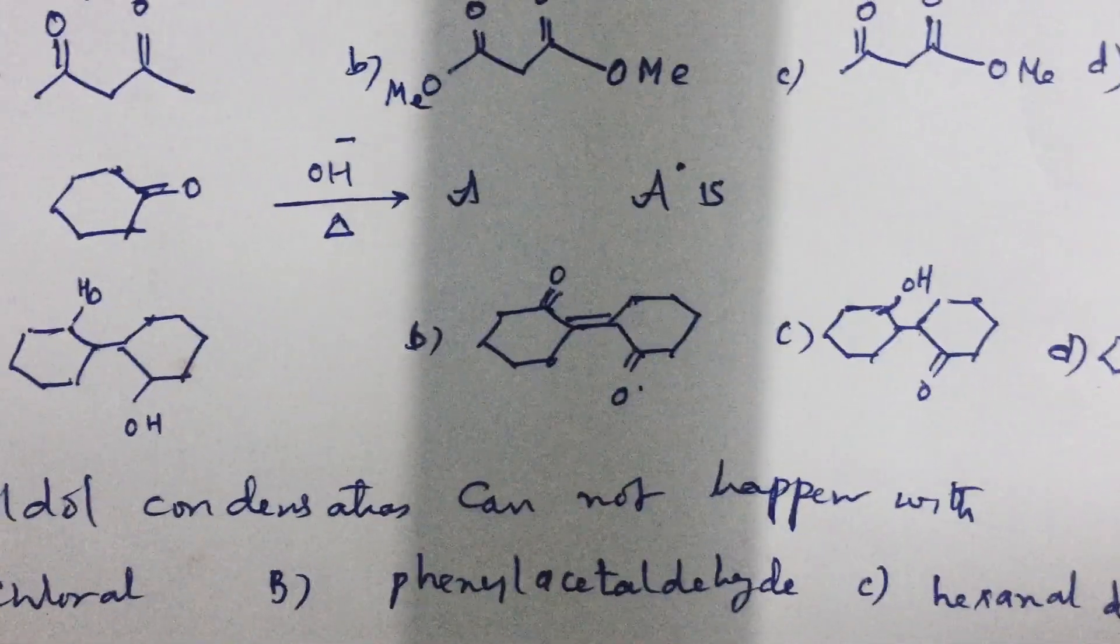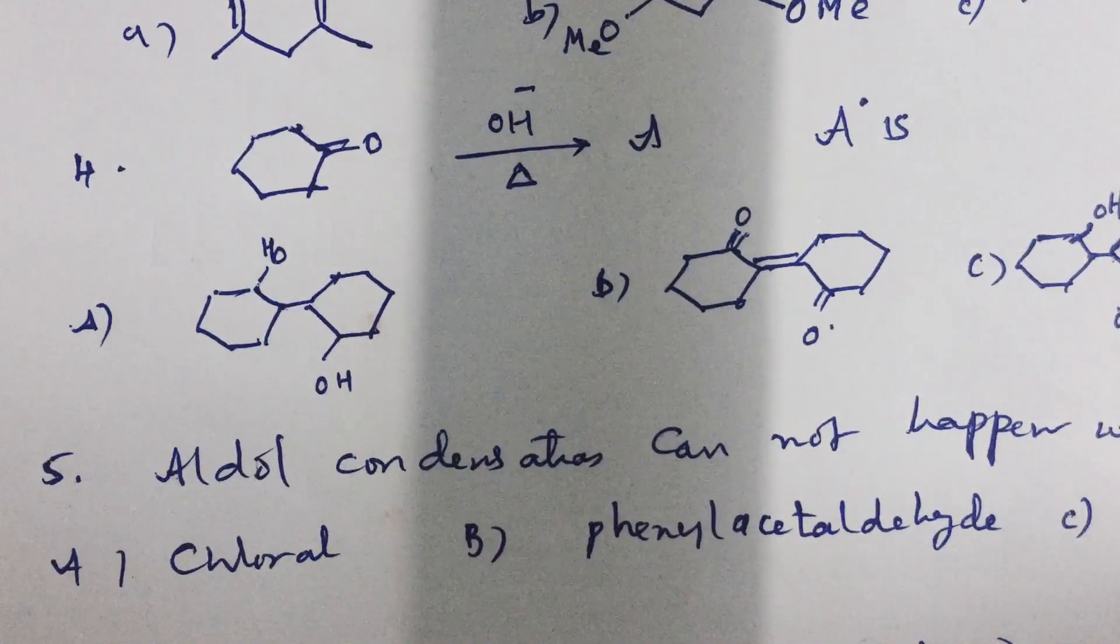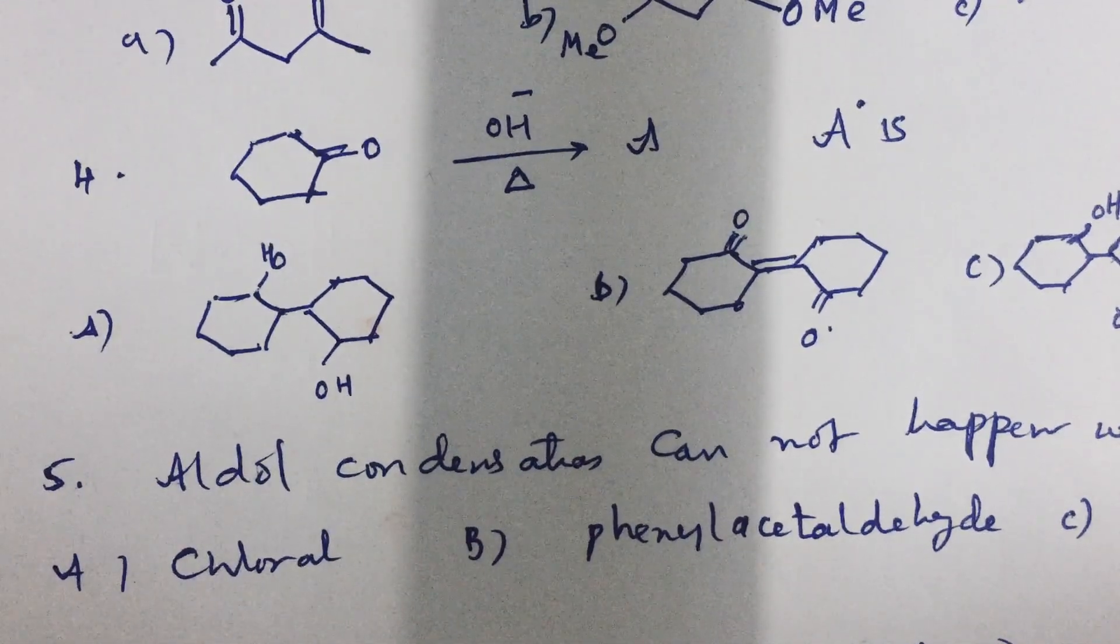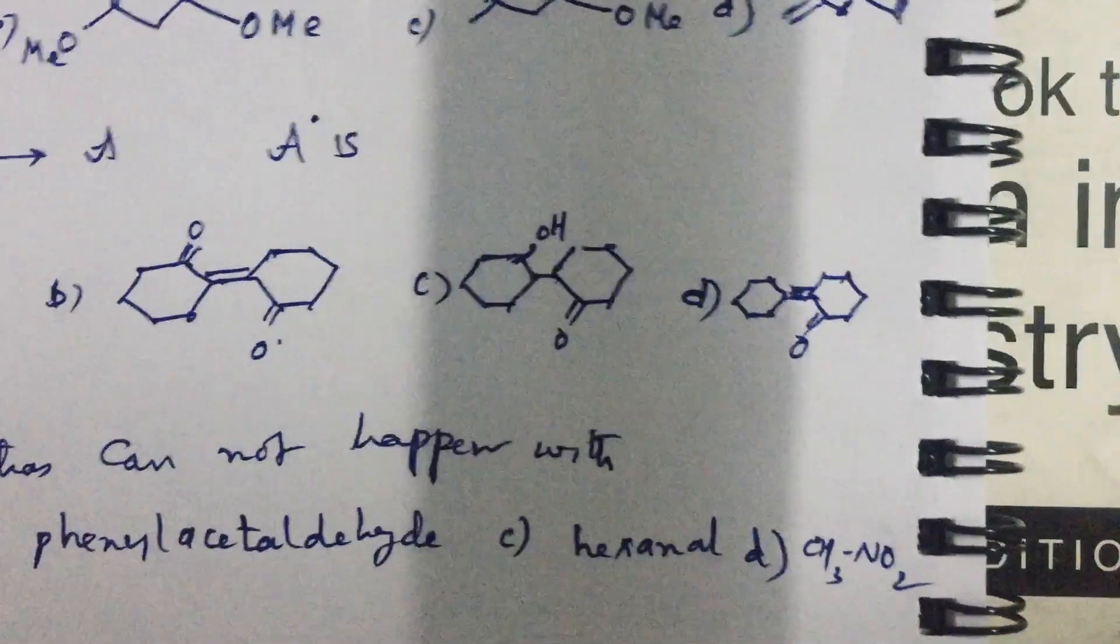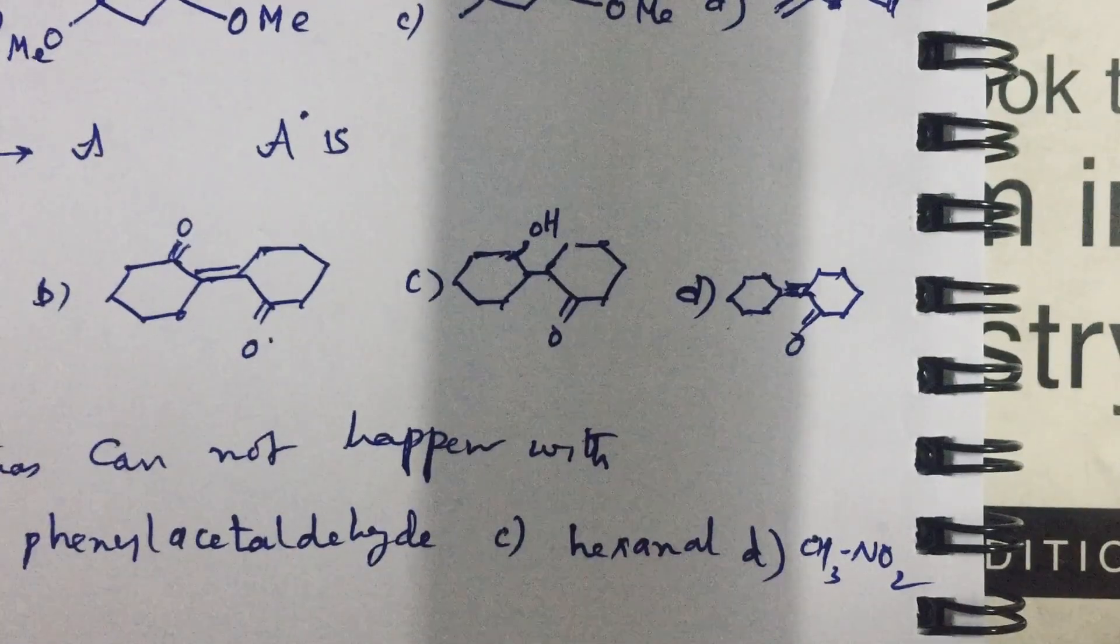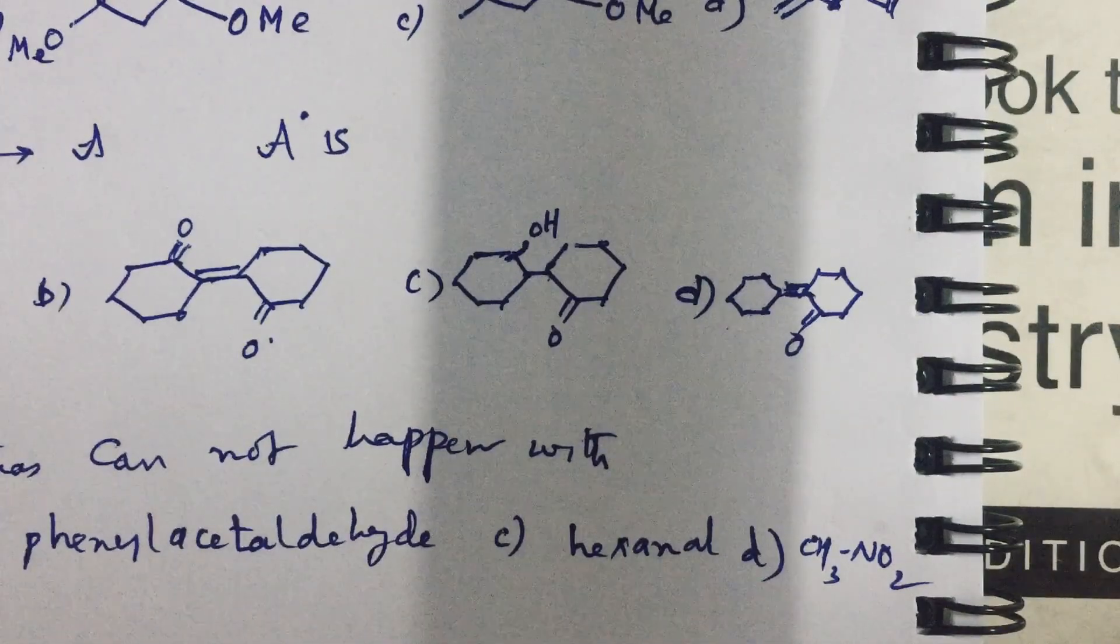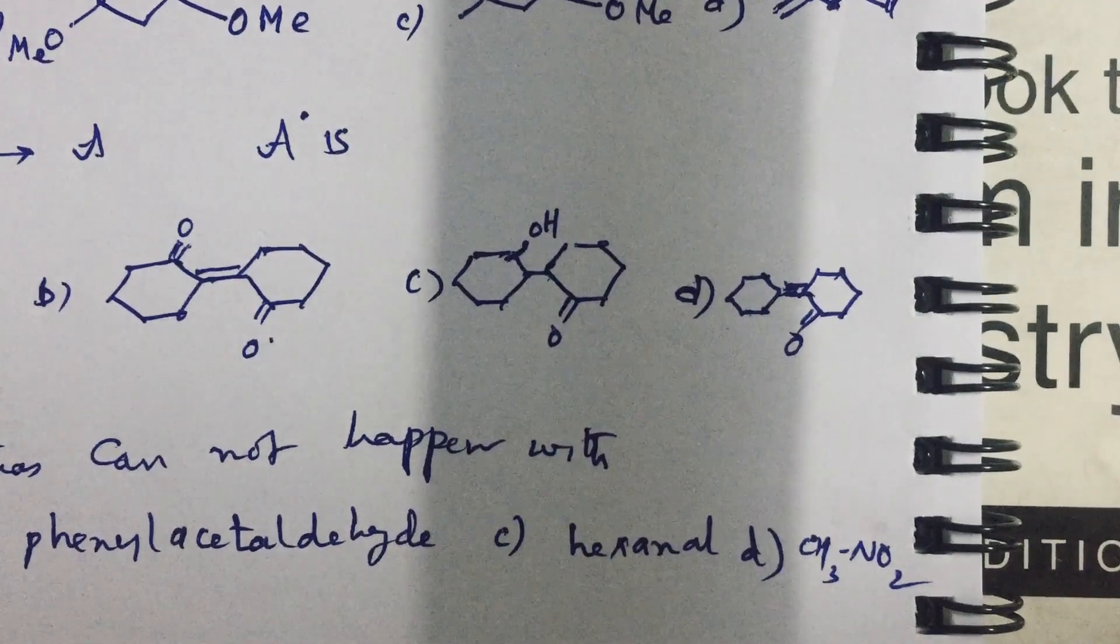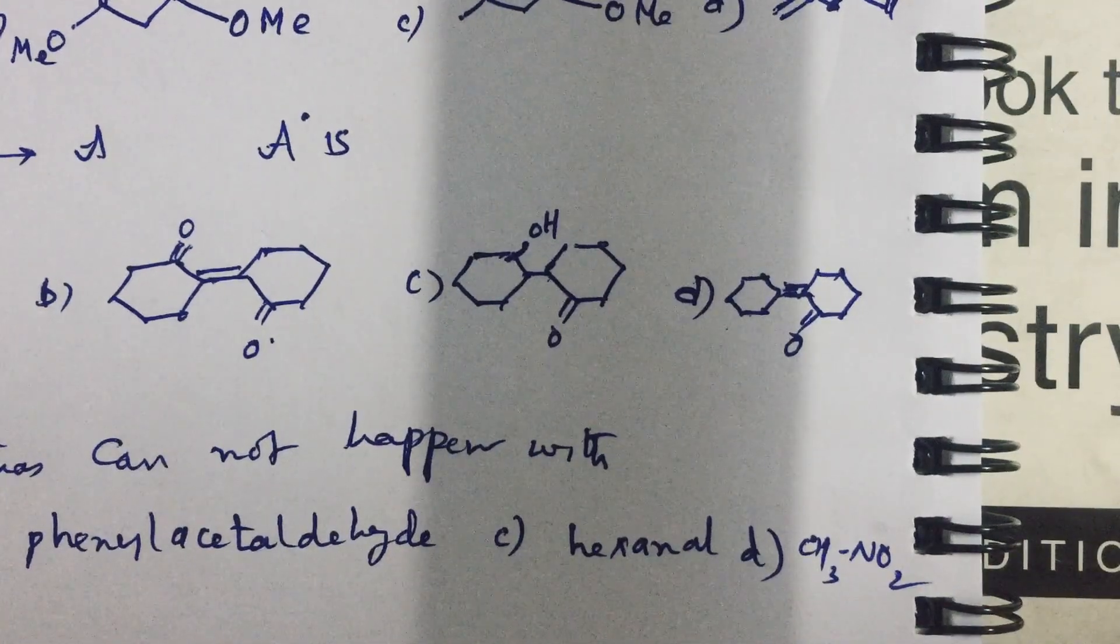Aldol condensation cannot happen with a molecule which is not having alpha hydrogen. A is not having alpha hydrogen, B has alpha hydrogen, C has alpha hydrogen and surprisingly D, though it is not a carbonyl compound as such, nitromethane can also undergo a kind of aldol condensation because of the electron withdrawing group. It can make a carbanion that can attack a carbonyl carbon further. In fact, that reaction of nitromethane and aldol condensation is known as Henry's reaction.